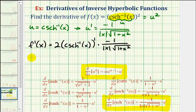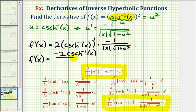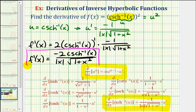Let's clean this up. f prime of x is equal to two times negative one, that's negative two, times one factor of inverse hyperbolic cosecant of x, all over the absolute value of x times the square root of one plus x squared. This is our final derivative function.